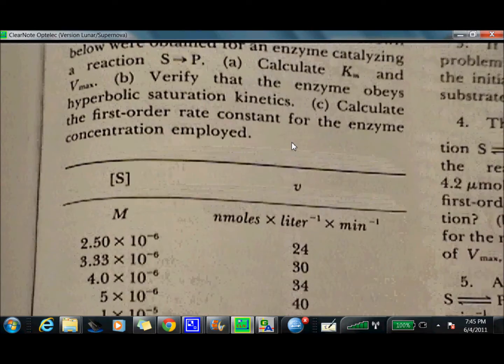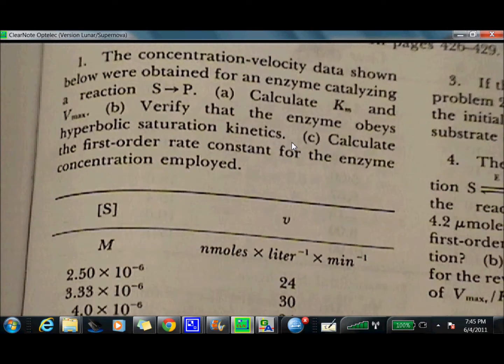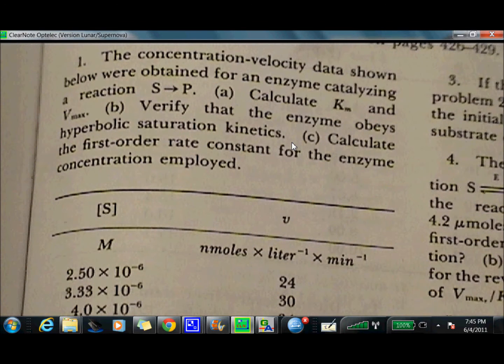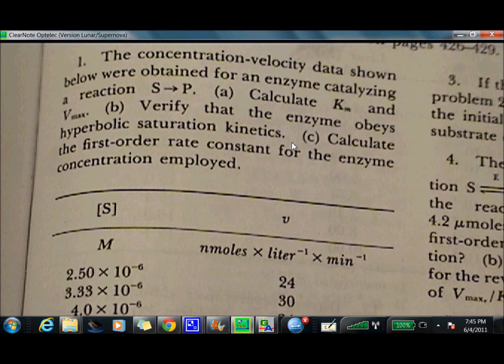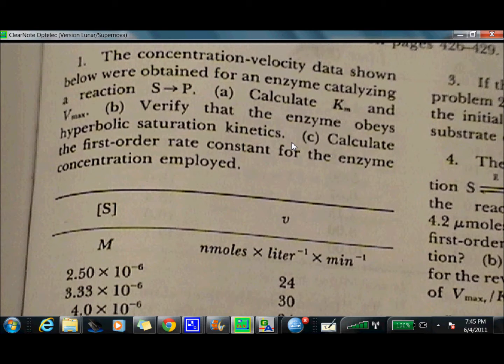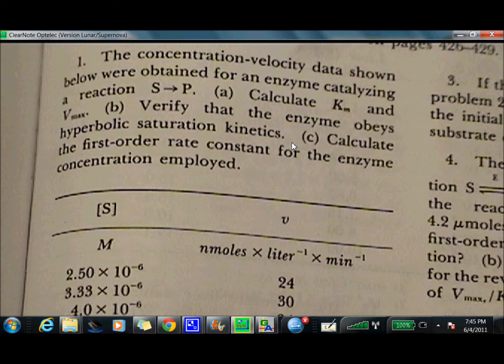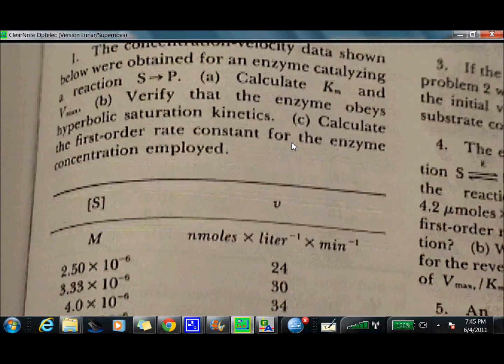So what this is, is the concentration velocity data shown below were obtained for an enzyme catalyzing a reaction S to P. Calculate Km and Vmax, verify that the enzyme obeys hyperbolic saturation kinetics, and calculate the first rate constant for the enzyme concentration employed.